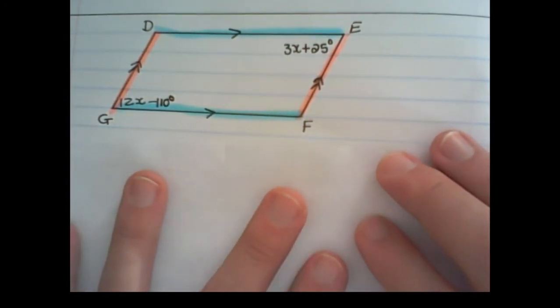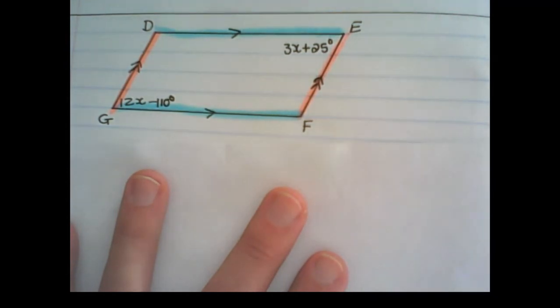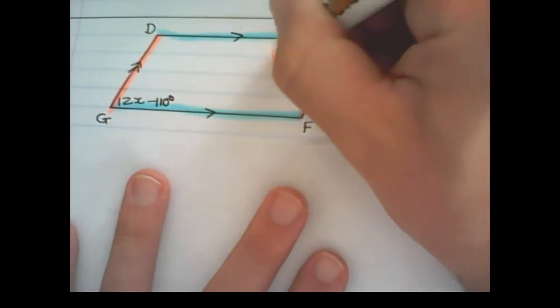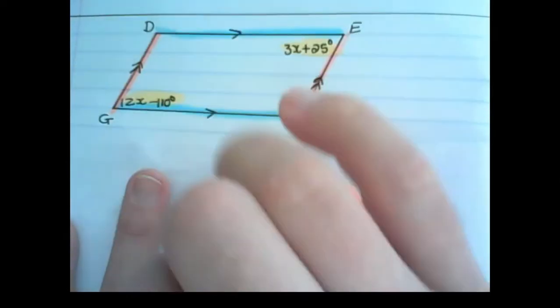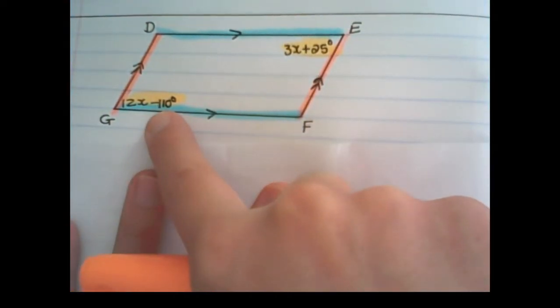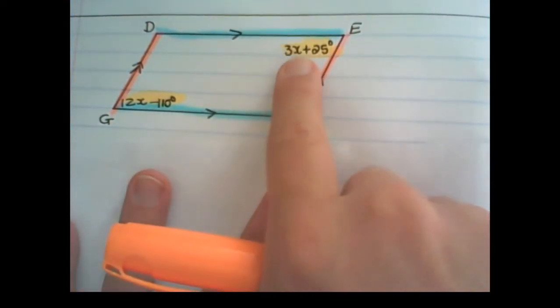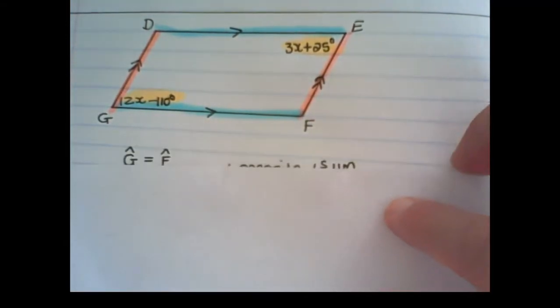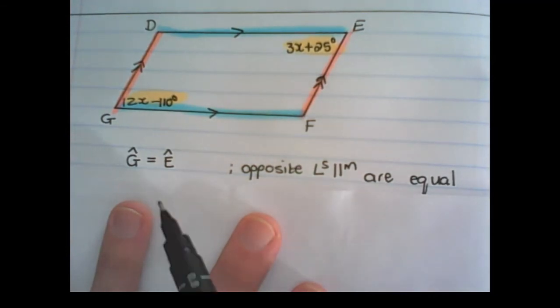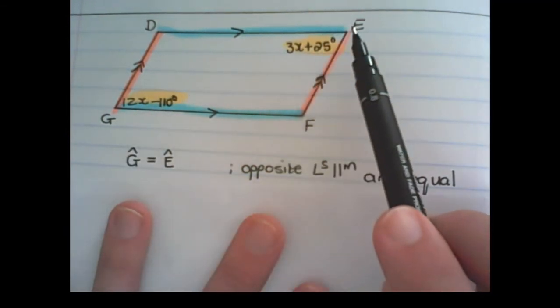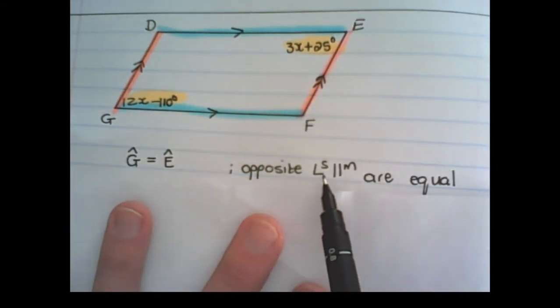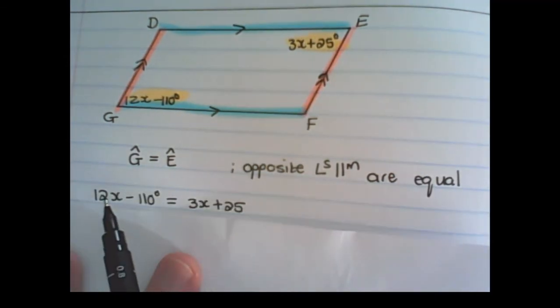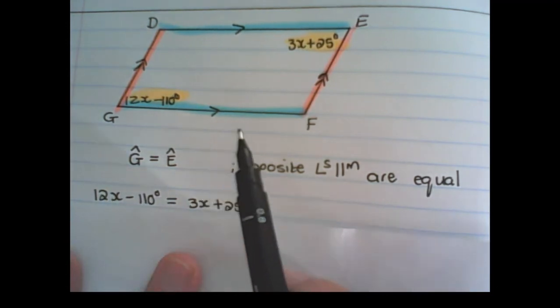One of the properties of a parallelogram is that opposite angles are equal. Therefore we can set 12x minus 110 degrees equal to 3x plus 25 degrees. So I would say angle G is equal to angle E. Opposite angles of a parallelogram are equal. That is the reason. Then I set 12x minus 110 degrees equal to 3x plus 25 degrees.